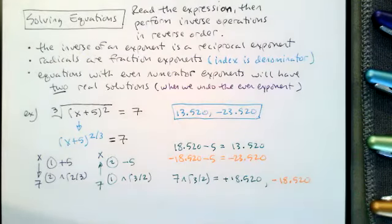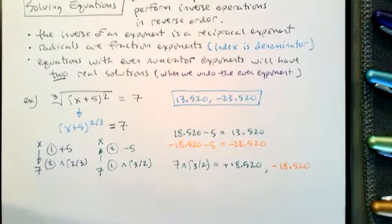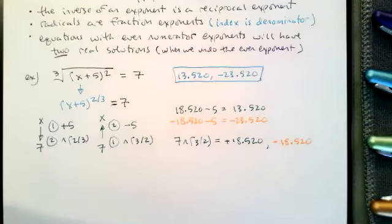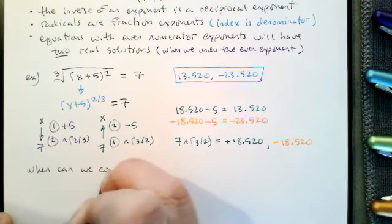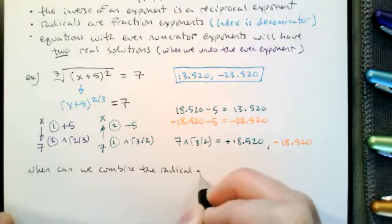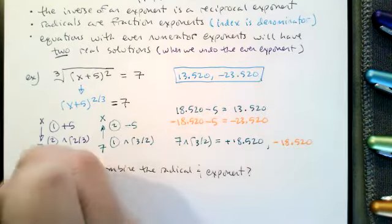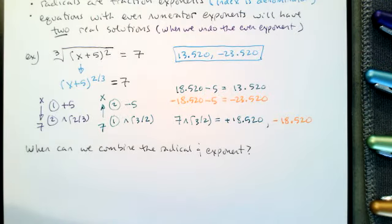This incorporates all the things we wanted to do when we read the expression. Now, combining the radical and the exponent raises an important question: when can we combine the radical and the exponent operations? In this case we could, because if we read the expression — the cube root of (x + 5) squared — we can combine them.